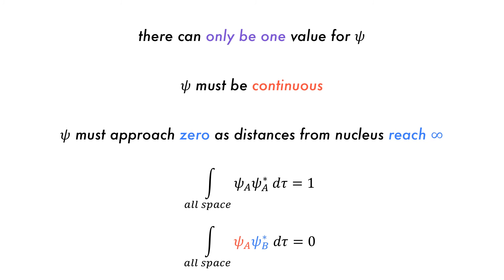And finally, the wave function of two different orbitals in an atom must be orthogonal to each other, that means they cannot exist in the exact same position.